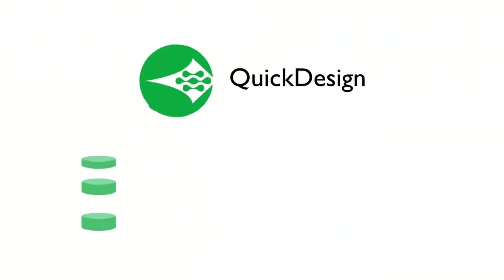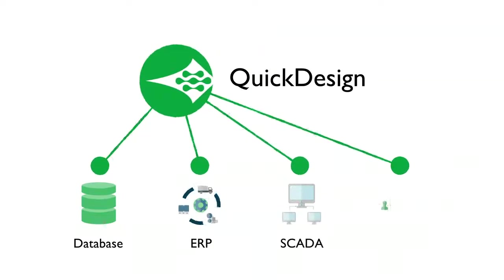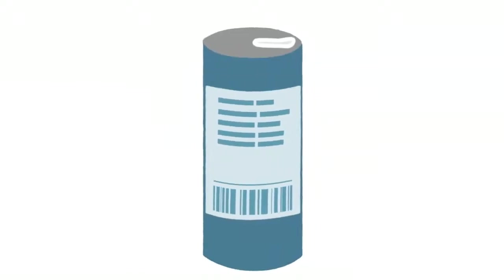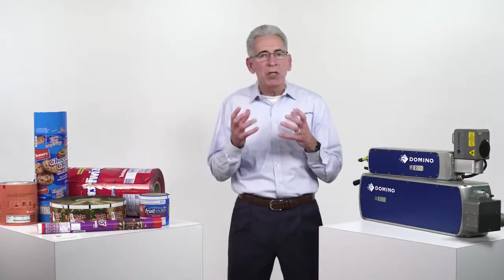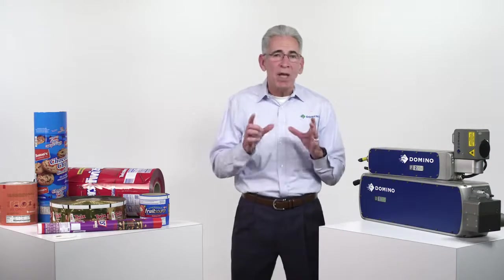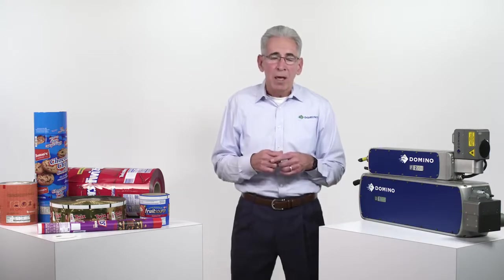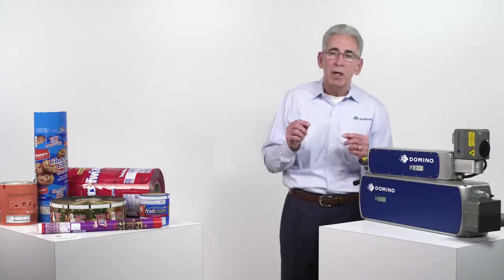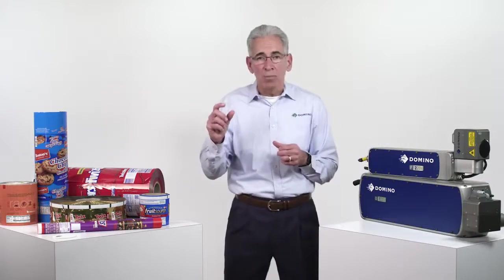No matter where the coding information is coming from, whether it's from the ERP system, production planning, or quality control, we can take that data and load it directly into the coder so there's never an opportunity for error. Studies show that once we get a few hundred keystrokes, we're going to miskey something or reverse the order of characters. But we can take the human error out of it. We can also use Ethernet IP for PLC communication and control, which is a standard option for the laser product line. I'm talking about true Ethernet IP with Rockwell Automation and Compass partner. That's Domino.